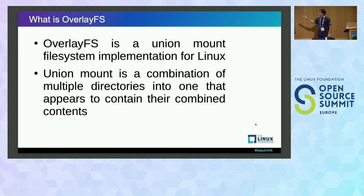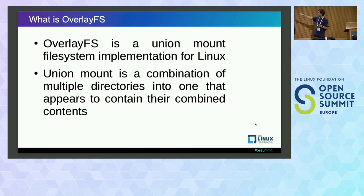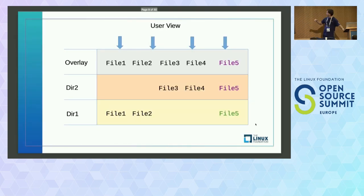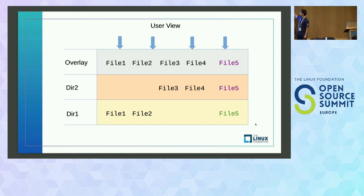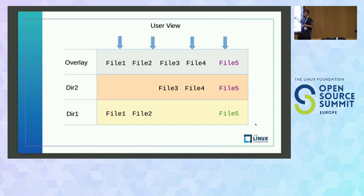So what is overlayFS? That's the excerpt from Wikipedia. When I first read it: it's an implementation of a union mount file system. What is a union mount? A union mount is a combination of multiple directories which appear as one. So how does it look? Imagine you have directory one with files one, two, and five, and directory two with file three and five. When you mount an overlay, you look at it from the top — you would see all files present as if in one directory, while underneath there are two different directories.